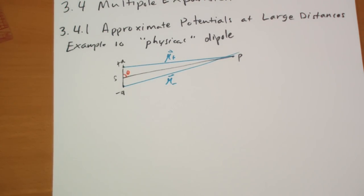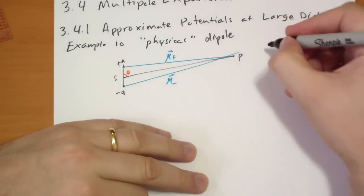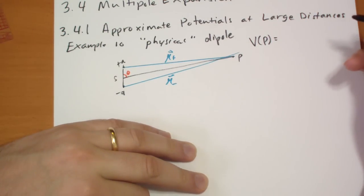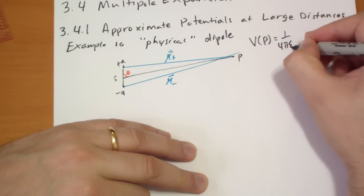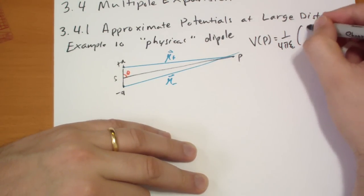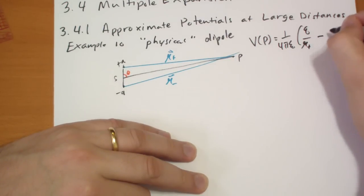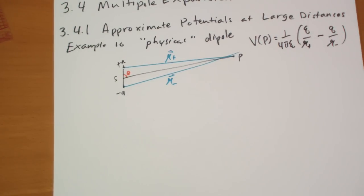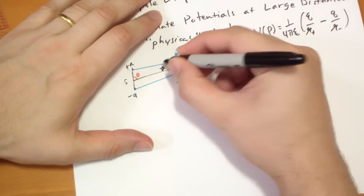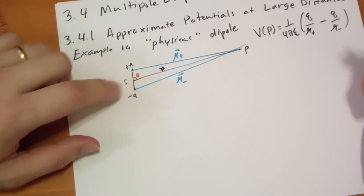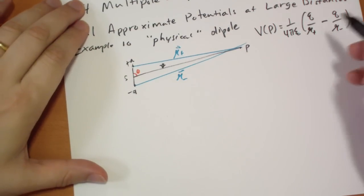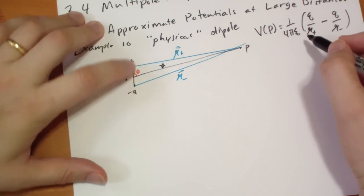So what we do next is we write out, using superposition, the equation that describes the potential at this point P. So, V of P is just equal to 1 over 4 pi epsilon naught times Q over R plus minus Q over R minus. It's easy. Let's remind ourselves that this vector is called R. It's the position vector for where P is. The origin, obviously, is right here.